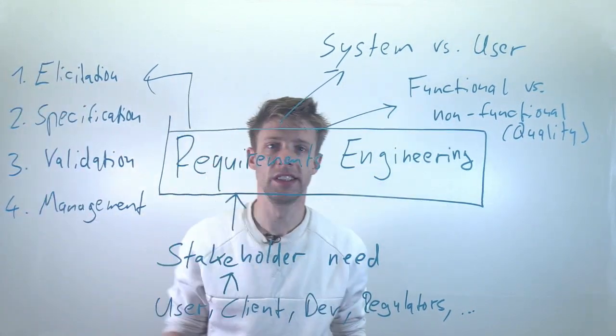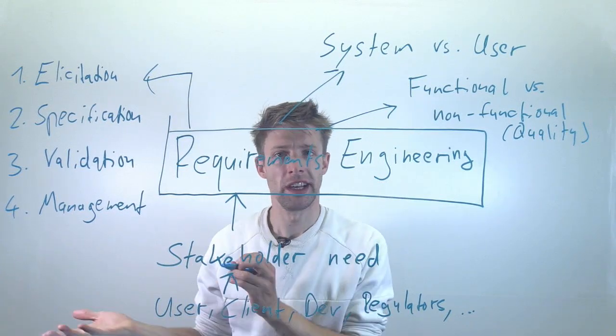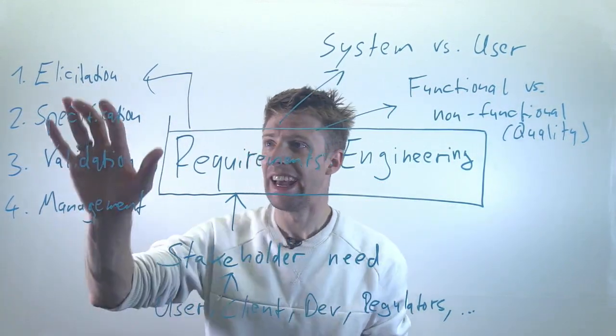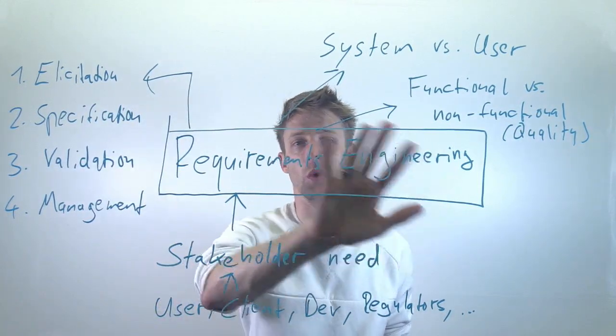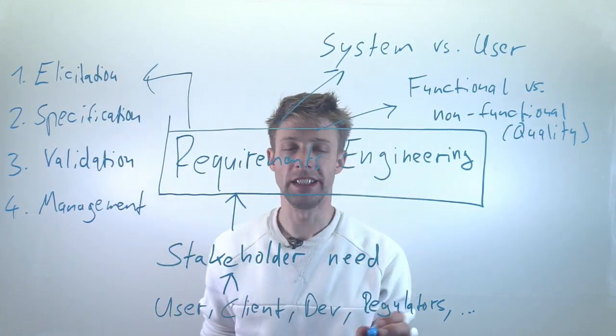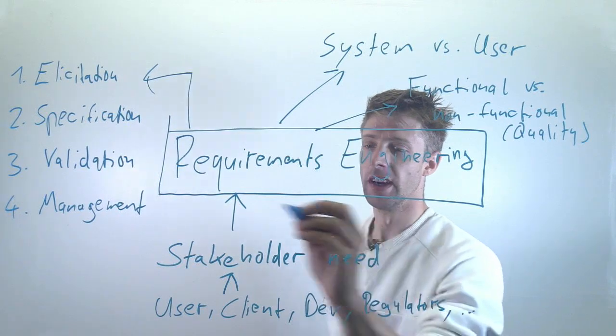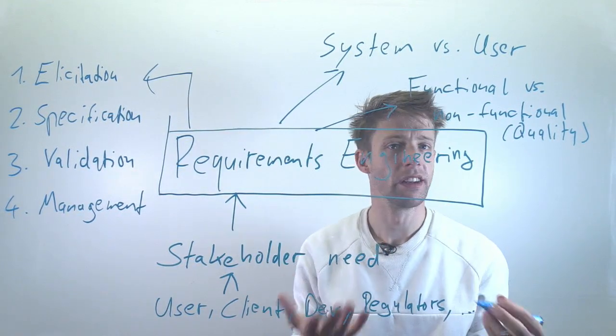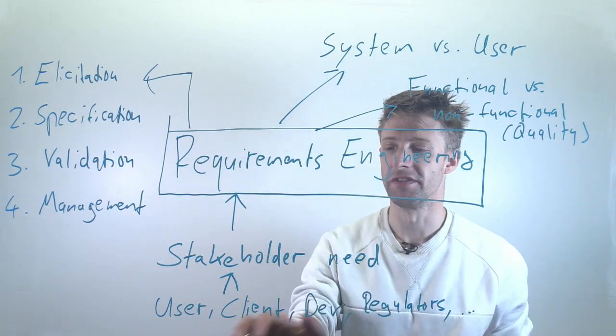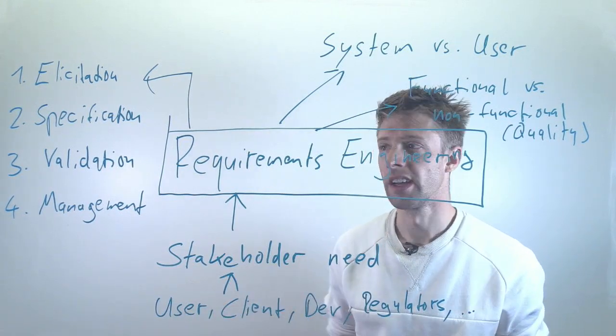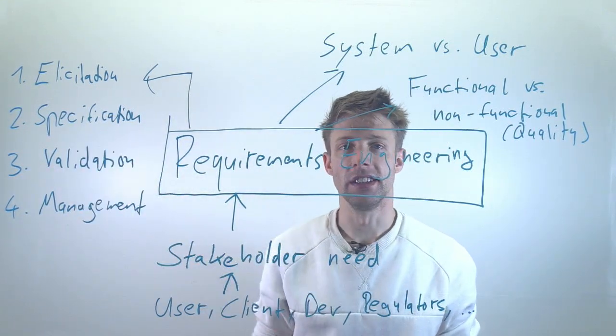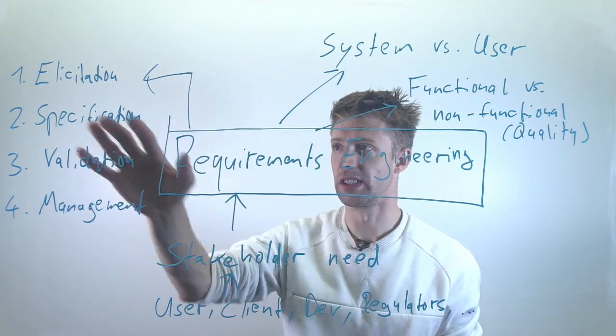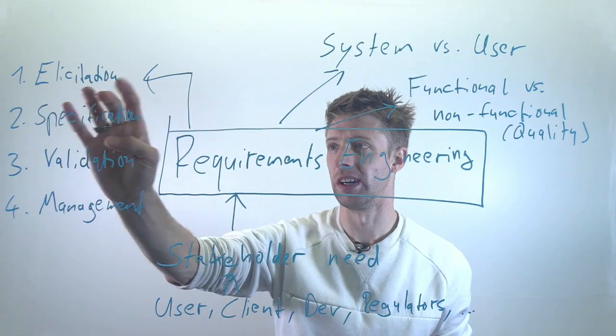We will go into these four different activities in the remaining videos, but just to give you an overview. Elicitation is about finding out what the requirements are, so basically figuring out, discovering what are the stakeholder needs. That's for example through doing interviews or surveys or observing users in their daily work.